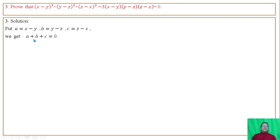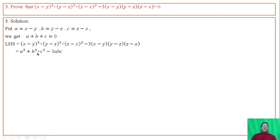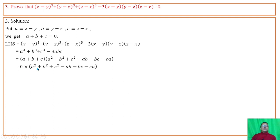Adding these 3 terms we have a plus b plus c equal to 0. The left-hand side of the given expression becomes a cube plus b cube plus c cube minus 3abc, whose factorization form is (a plus b plus c) times (a square plus b square plus c square minus ab minus bc minus ca). Since a plus b plus c equals 0, and 0 into any finite number is 0, the left-hand side equals 0. Hence proved.